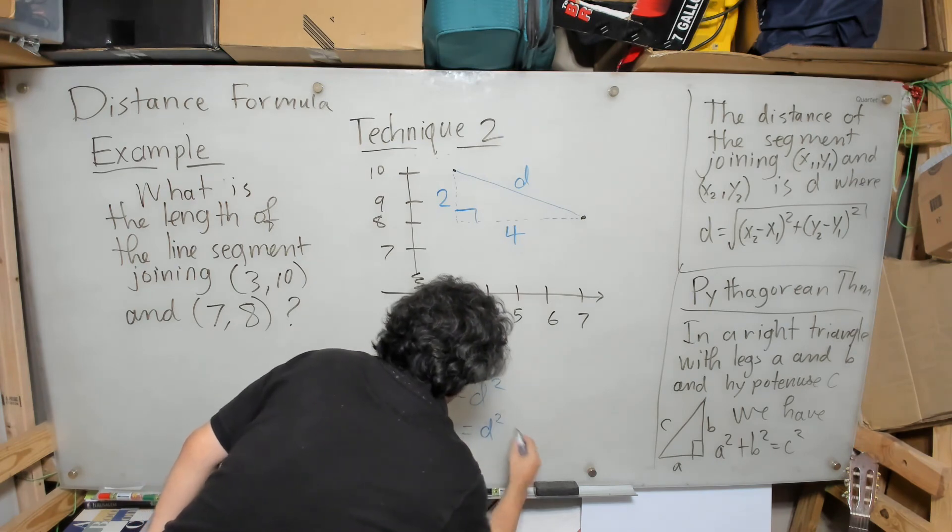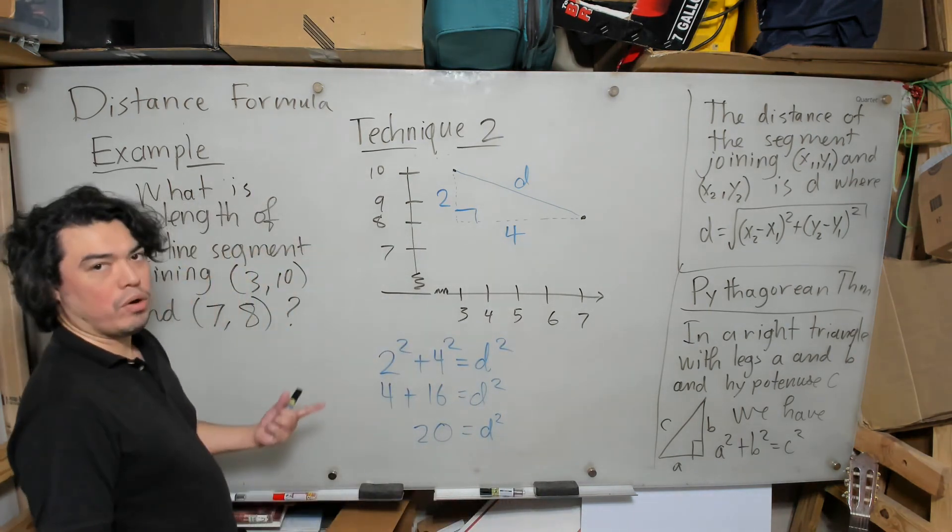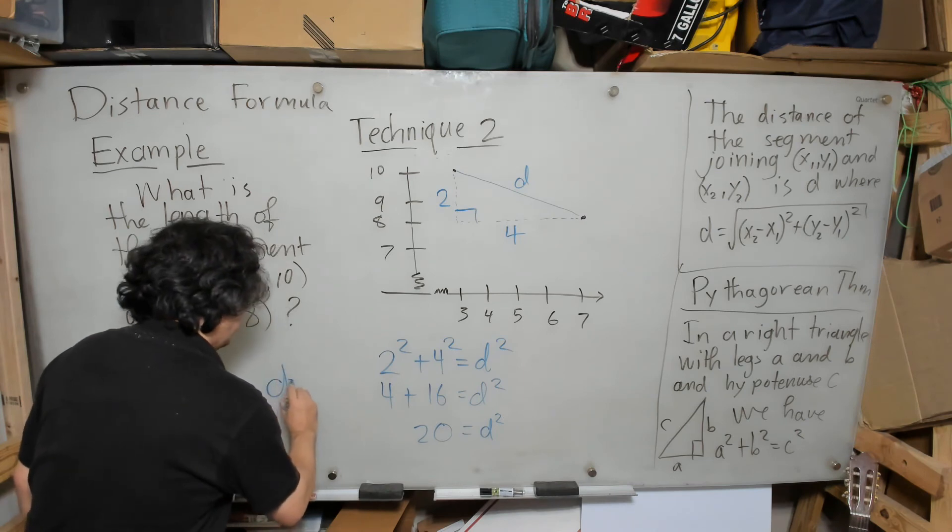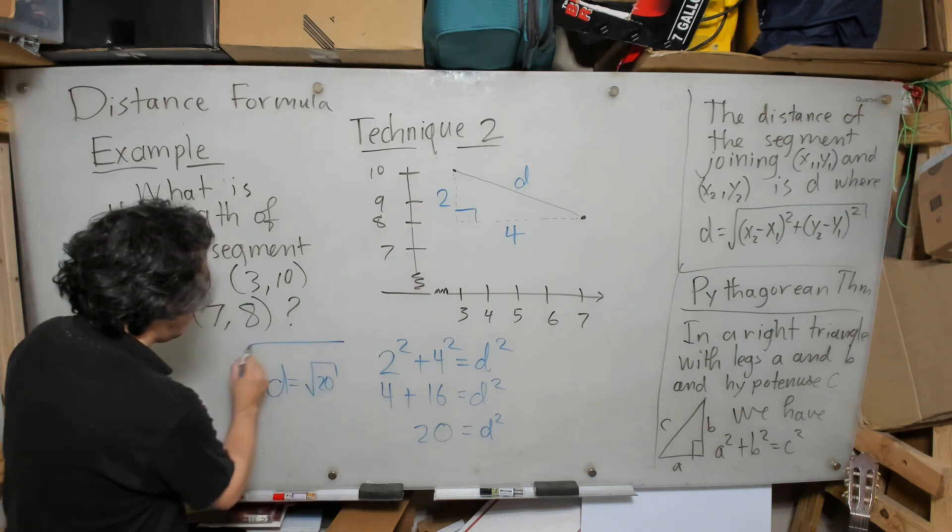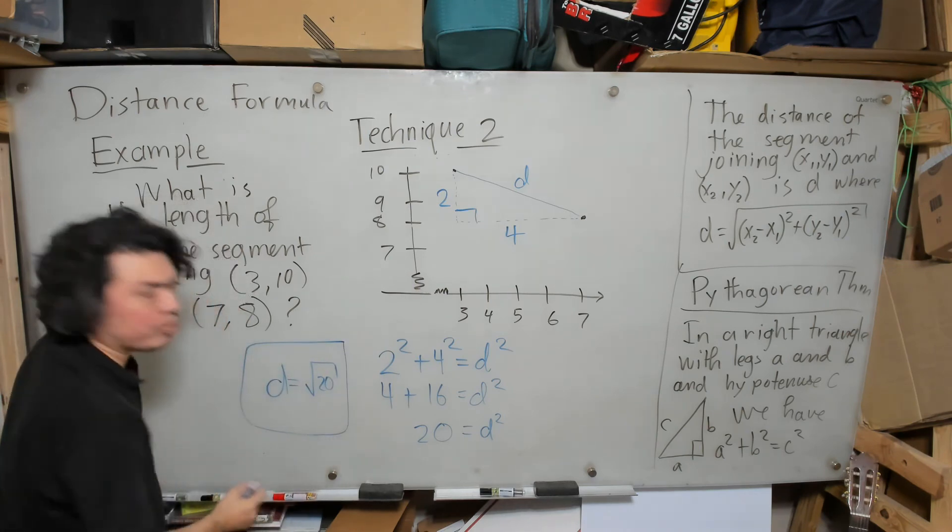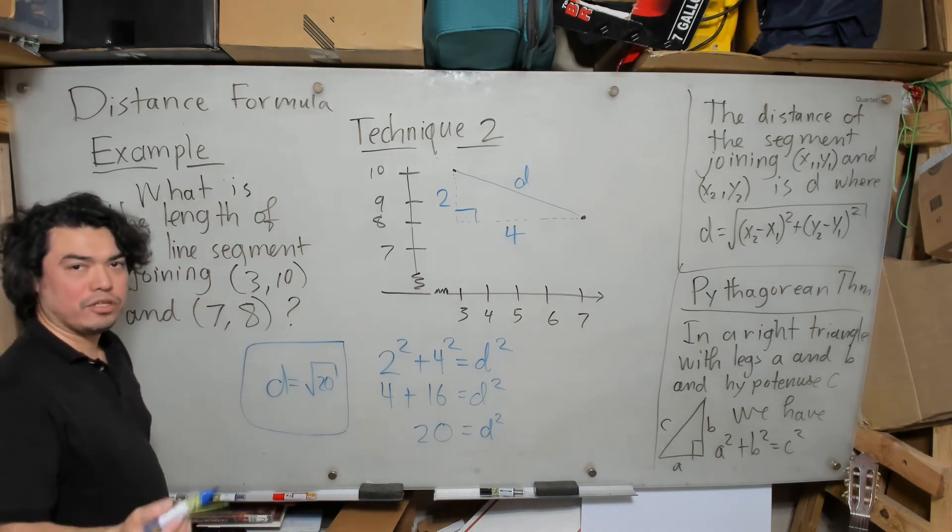So 20 = d², and so we know that d is going to be the square root of 20, which as we know we got before, it can be simplified to 2√5.